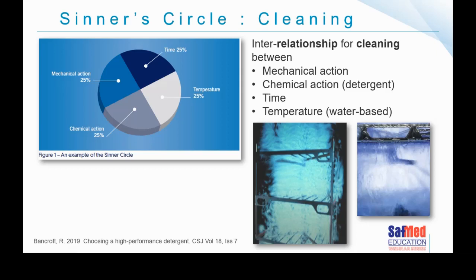When you're cleaning manually, the mechanical action comes from the rubbing and scrubbing using a brush or cloth. In an automated washer disinfector, that mechanical action comes from the water — the pressure, the force of the water. If you look at the images on the slide, you'll see different images displaying the force of water inside a washer's chamber. That's often referred to as impingement, or the impingement value. We need all of these elements in place as described in Sinner's circle.